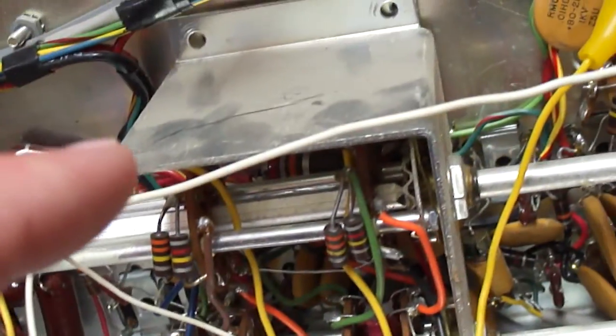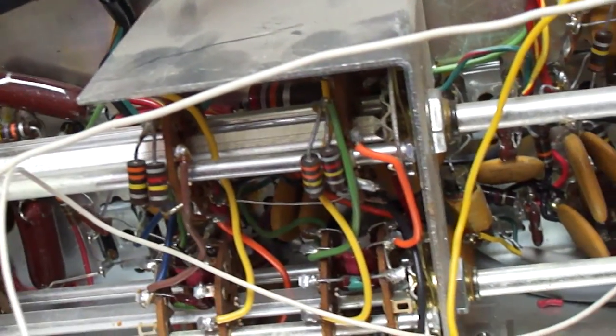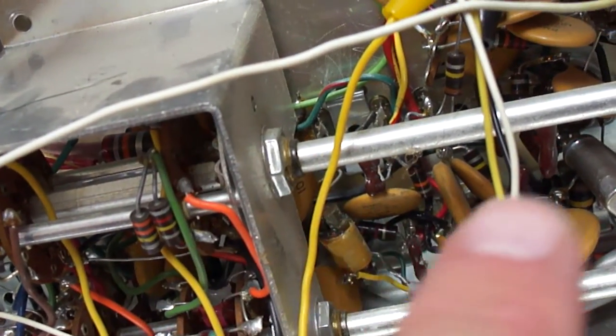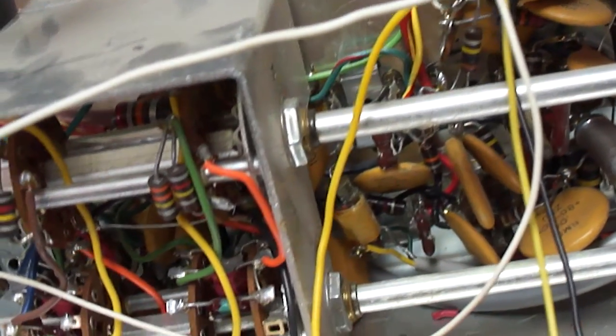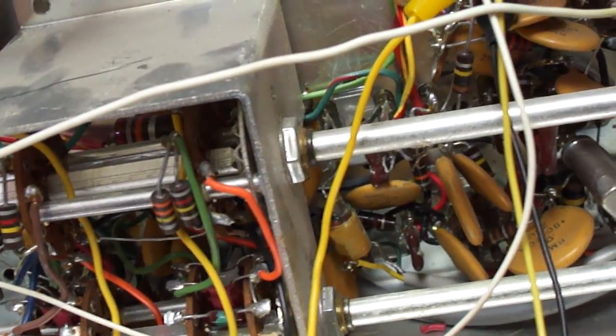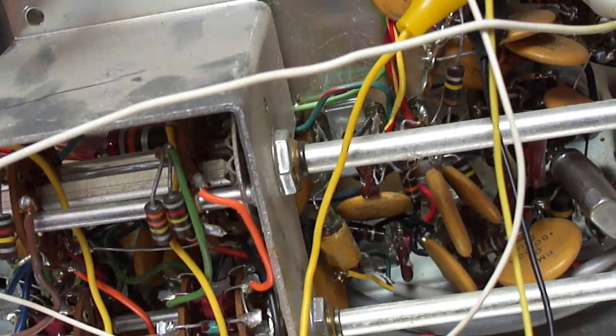I'm going to have to try to take this band switch unit off of here, which is going to be a lot of work. But I have a feeling one of the bad IF cans is in here somewhere. There's a couple of IF cans that look a little different from the other ones, so I'm hoping those are the ones with the bad mica in them.